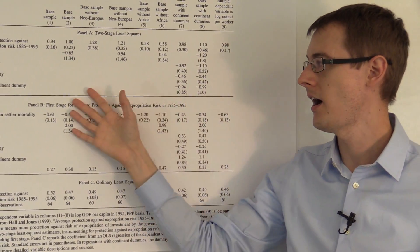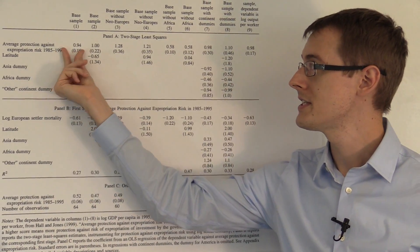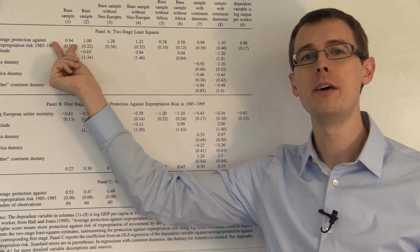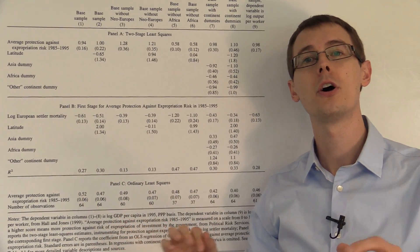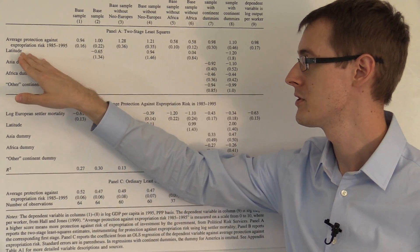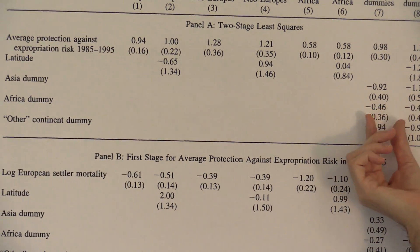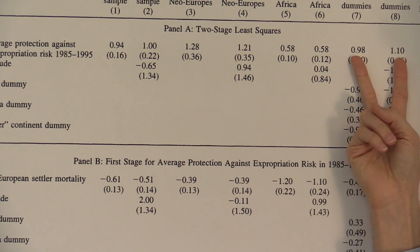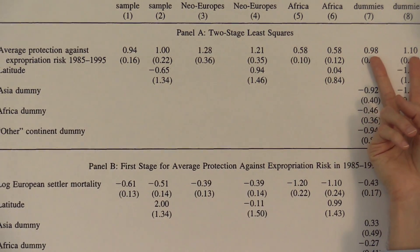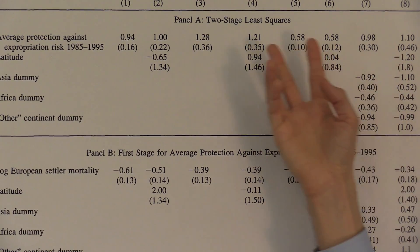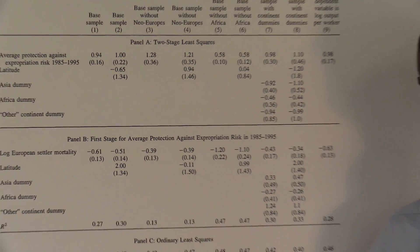All the rest of these columns are just doing different robustness checks to make sure that this number isn't explained away by other possible theories — like maybe geography matters. So they include variables like latitude and what continent you're on in other specifications. And they find that the coefficient on the treatment variable is still positive and statistically significant across all of their specifications. So that's the main results in this paper.